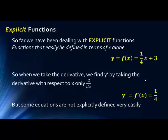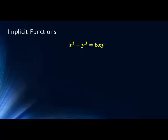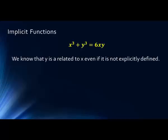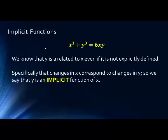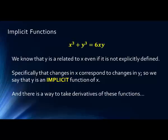Some equations are not explicitly defined very easily — that is, we don't have all y's on one side and x's on the other. For example, the equation x cubed plus y cubed equals 6xy would be very difficult to solve for y. We know that y is related to x even if it is not explicitly defined. So as we change the value of x, we can see that's having an impact on y. Even though it's not explicit, it is still implicit that as x changes, so does y. That's what we call y being an implicit function of x, and there's a way to find the derivatives of these functions called implicit differentiation.